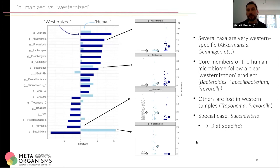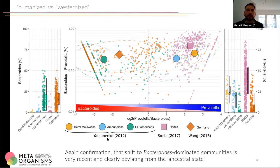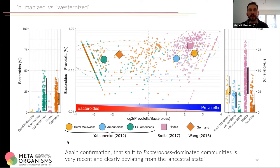This whole shift from the Prevotella-dominated community towards the Bacteroides-dominated community has been seen before in other studies, and this again confirms that looking at western populations means looking at something that may not represent the natural or ancestral state of the human microbiota. So it makes a lot of sense to expand studies to less represented populations from, for example, Africa or South America, which is done by only a few groups worldwide, but should really shift into the focus of human microbiome research.